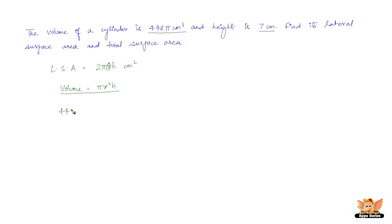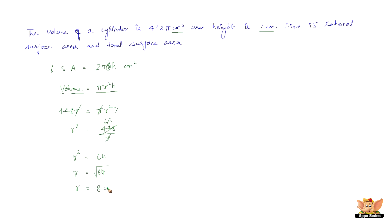Volume is given as 448π. Equate this to πr²h, where h is 7. We can cancel π on both sides and get r² = 448/7, which is 64. Therefore r = √64 = 8 cm. So the radius we need is 8 centimeters.